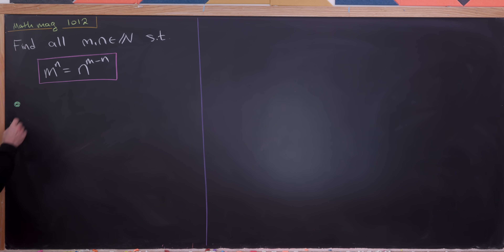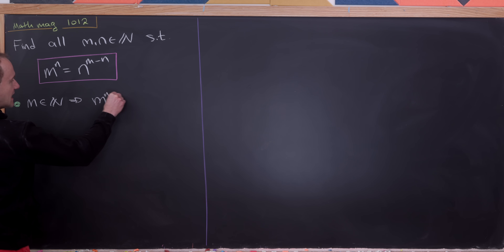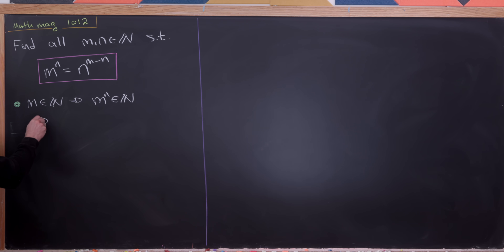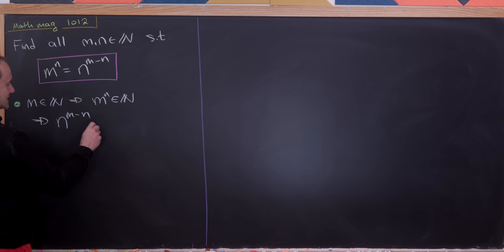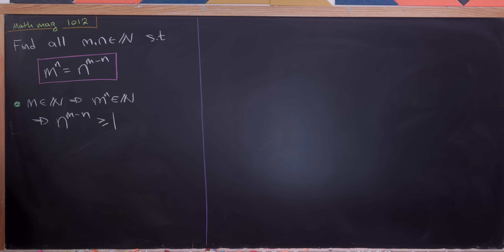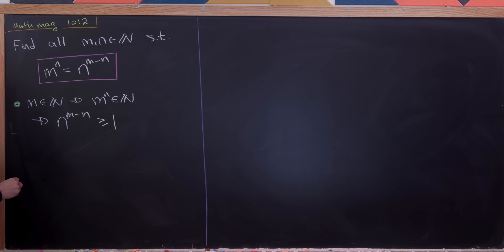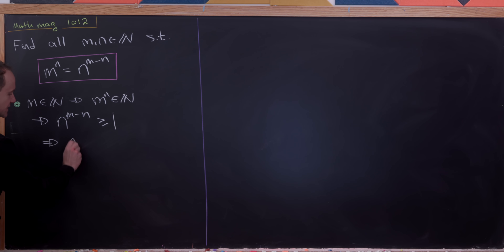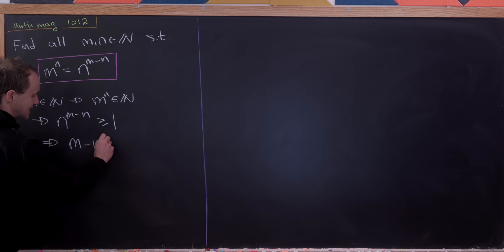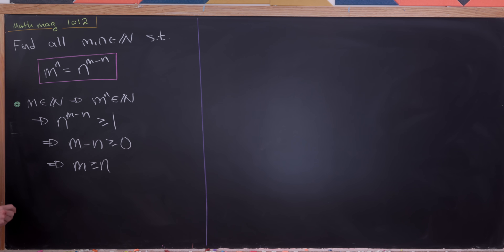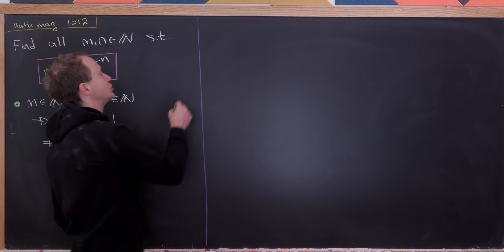Let's first notice that m being a natural number implies that m to the n is most definitely also a natural number. But then that implies that n to the m minus n is going to be a natural number bigger than or equal to 1. If this is bigger than or equal to 1, then the exponent m minus n is bigger than or equal to 0, which means that m is bigger than or equal to n. Now let's split that into two cases.